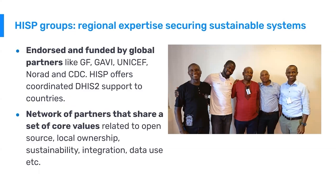It has taken time to convince partners and investors that the HISP group approach is the right one. But it is now endorsed and funded by global partners like the Global Fund, Gavi, UNICEF, NORAD, and CDC. Having all these partners aligned around the same approach also enables us to help coordinate and align investments at the country level. All the HISP groups in the network share a set of core values related to open source, local ownership, sustainability, integration, and data use. You can read the full list of principles on our website, and each HISP group signs an MOU where these values are listed and they are expected to follow these principles.